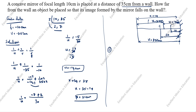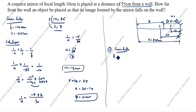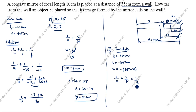In the second method, I will erase this and take the unknown distance from the wall as x. That means the object distance u is equal to minus of 35 minus x. Given data: f equals minus 10 centimeter, v equals minus 35 centimeter, and u equals minus of (35 minus x). Using 1/u + 1/v = 1/f.